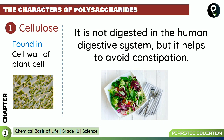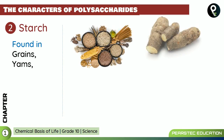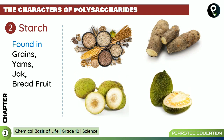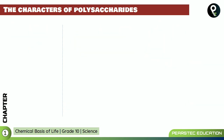The second type is starch. Starch is found in grains, yams, jackfruit, and breadfruit. Starch is the type of carbohydrate that is stored in plants — when a plant produces and stores carbohydrates, it stores them as starch in structures like grains, yams, jackfruit, and breadfruit.